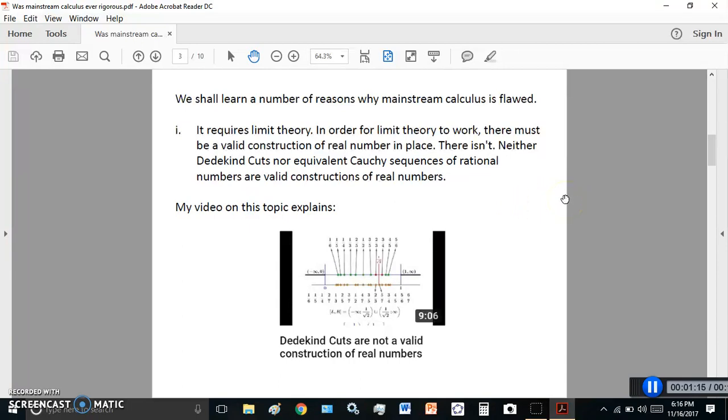Neither Dedekind cuts nor equivalent Cauchy sequences of rational numbers are valid constructions of real numbers. And my video on this topic, which has this image displayed, proves that this is the case. That Dedekind cuts are not a valid construction. And neither are Cauchy sequences, because a Cauchy sequence is easily derived from the lower set of a Dedekind cut.